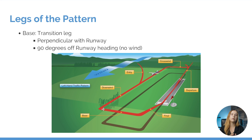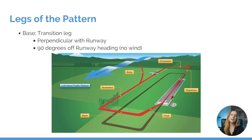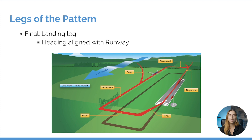At that 45-degree point, the aircraft will turn to their base leg. The base leg is used as a transition from the downwind to the final leg of the pattern. From the downwind to the base and final, the aircraft is now descending so that it can come in and land. The base leg is perpendicular to the runway — 90 degrees off of our runway heading, assuming no wind. Lastly, we have the final leg of the pattern, which is our landing leg, meaning our heading will be aligned with the runway. On final, the aircraft would be landing on runway 36, so their heading would be 360.